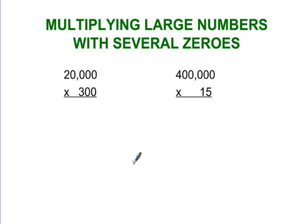When you see a problem like this, all you really have to do, as long as the zeros are on the end of the number, is copy all the zeros down first.